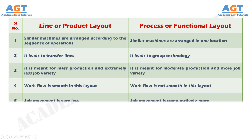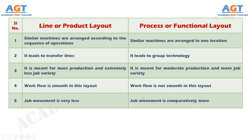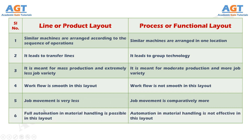Number 5: In product layout, job movement is very less, whereas job movement is comparatively more in a process layout. Number 6: In product layout, full automation in material handling is possible, whereas automation in material handling is not effective in process layout.